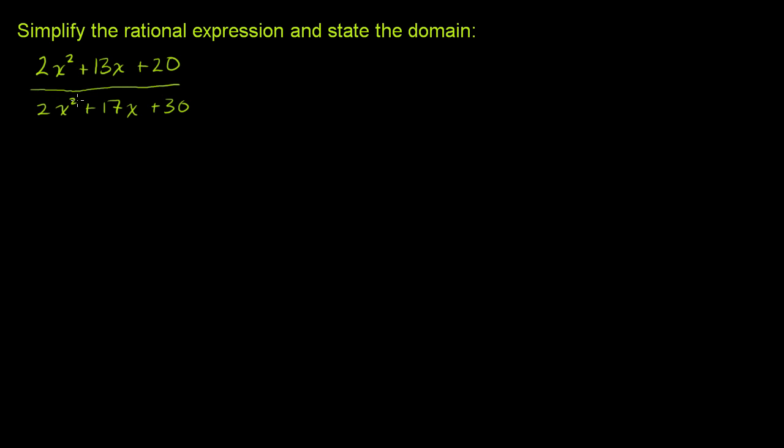So let's factor the numerator and the denominator. Let's start with the numerator. Since we have a 2 out front, factoring by grouping will probably be the best way to go. So let's just rewrite it here. I'm just working on the numerator right now. 2x squared plus 13x plus 20.